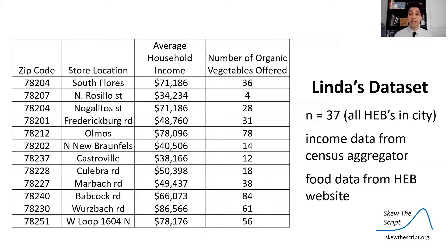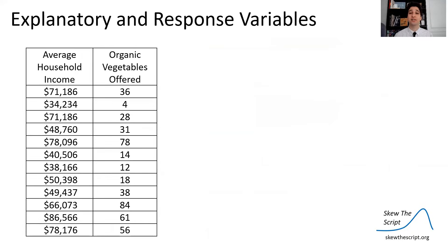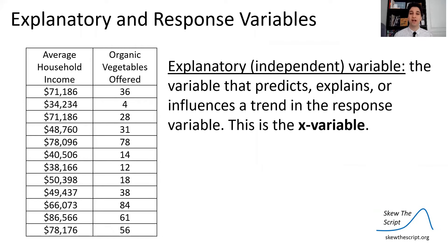She collected a large data set — there are 37 different main HEB locations in San Antonio — and she looked at the average income in the zip code in which each HEB store is located, as well as the number of organic vegetables offered in the store. When you have a data set like this, how can you define your different variables?